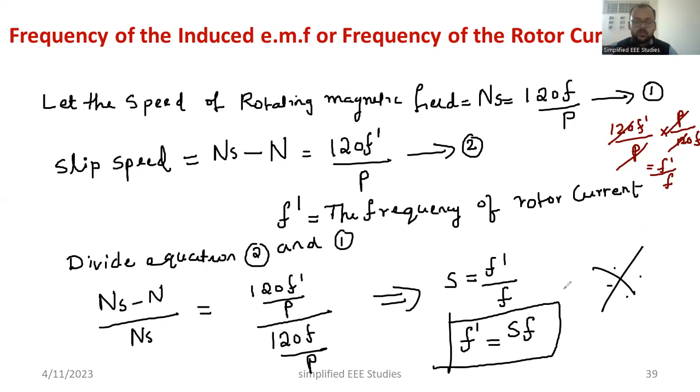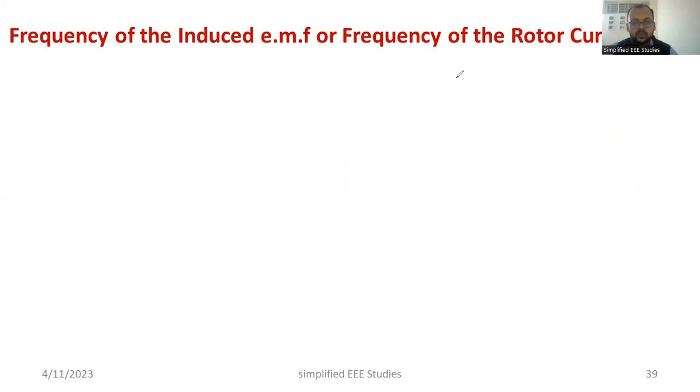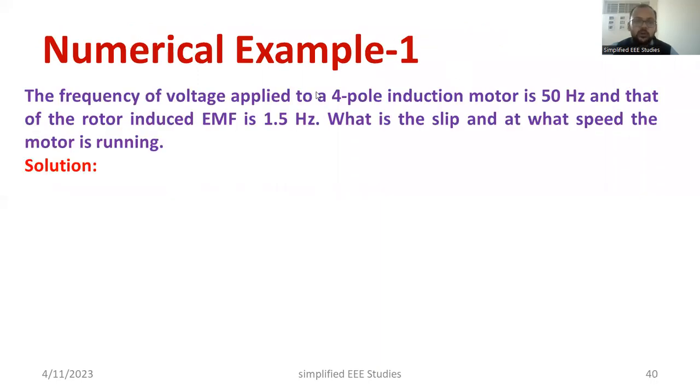If you know this formula, you can solve the following numerical example. Let us solve the numerical example. So I will show you one numerical example. First of all, you have to read the problem very carefully. The frequency of voltage applied to a four pole induction motor is 50 hertz and that of rotor induced EMF is 1.5 hertz. What is the slip and at what speed the motor is running?